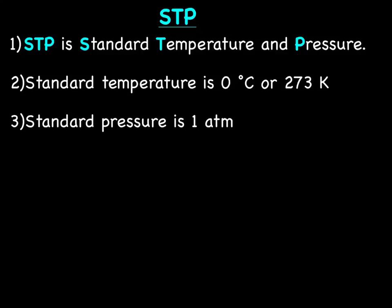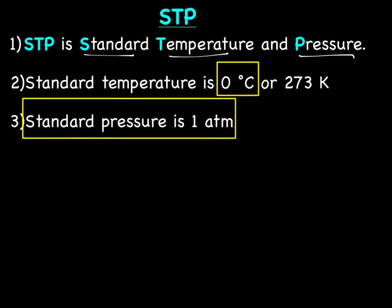We need to talk about something called STP. STP stands for Standard Temperature and Pressure. Whenever you see the word STP, or Standard Temperature, or Standard Pressure, or Standard Temperature and Pressure, those are actually numbers, not just words. So standard temperature is 0 degrees Celsius, which is 273K, and standard pressure is 1 atm. So if you're reading a word problem and it says the gas is at STP, that means the temperature is 0 degrees Celsius and the pressure is 1 atm.